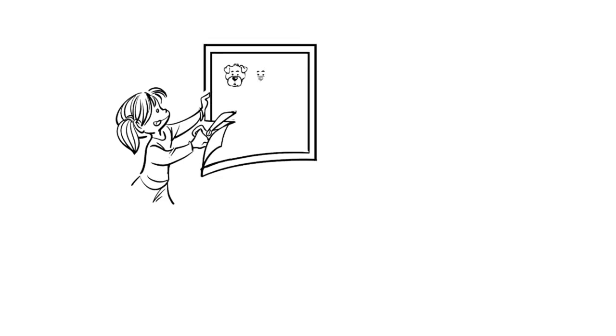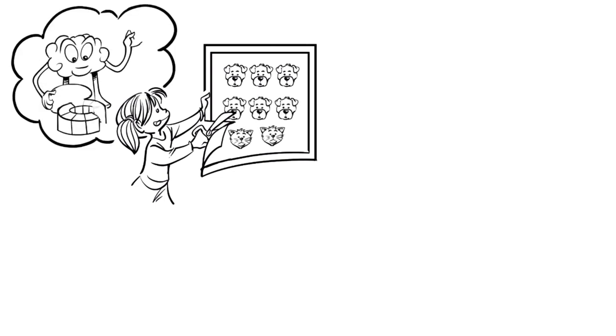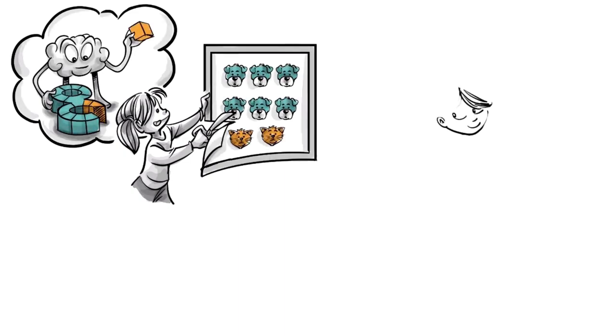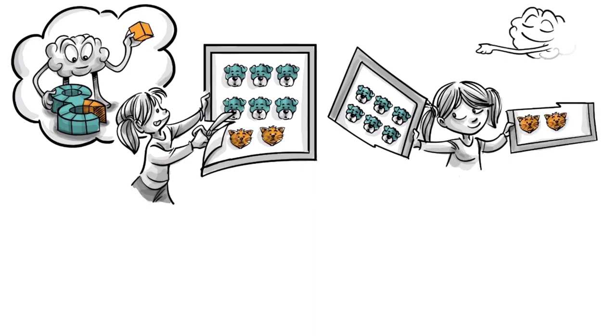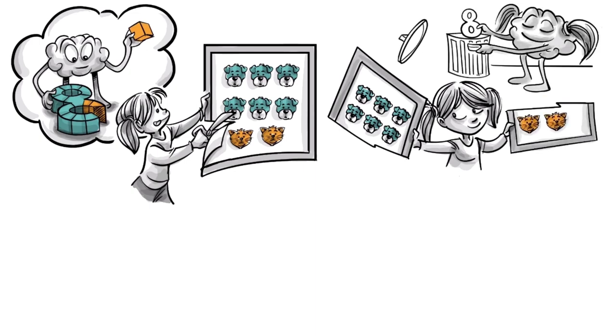This happens because once the child has to cut the whole into parts, for them, at that moment, the whole no longer exists. They have not yet constructed the concept of eight without thinking of it as a sum of its parts. So, when they divide the animals into cats and dogs, all they can think of are two parts of which one looks larger. The idea of eight is then forgotten.